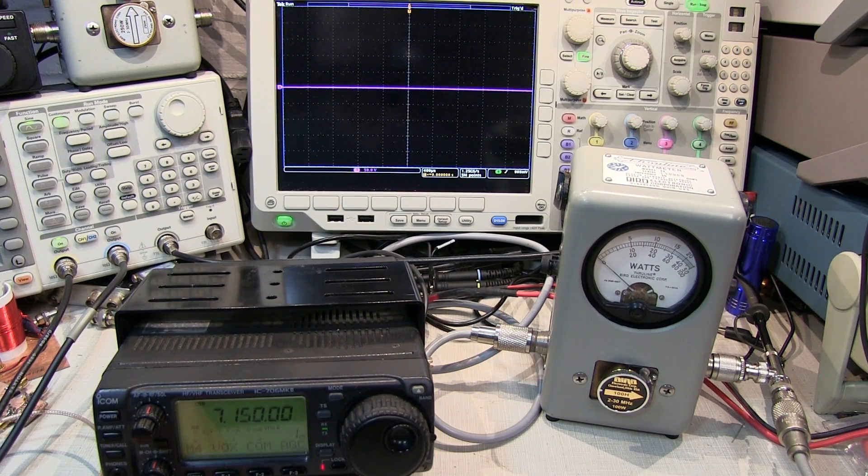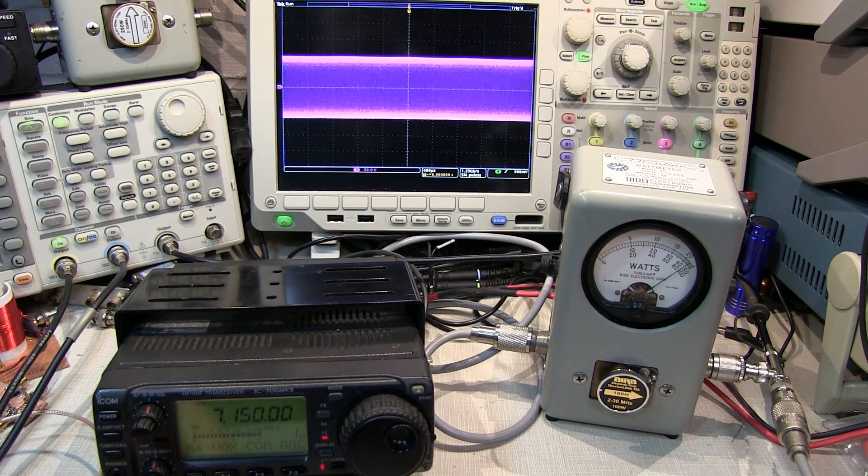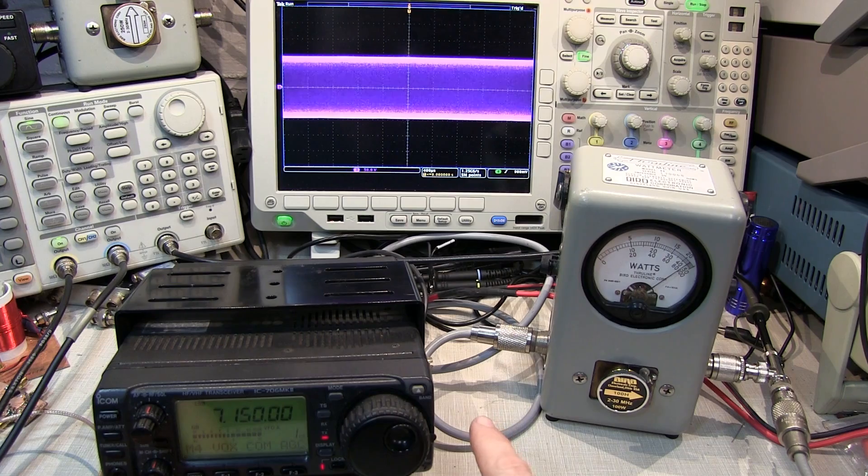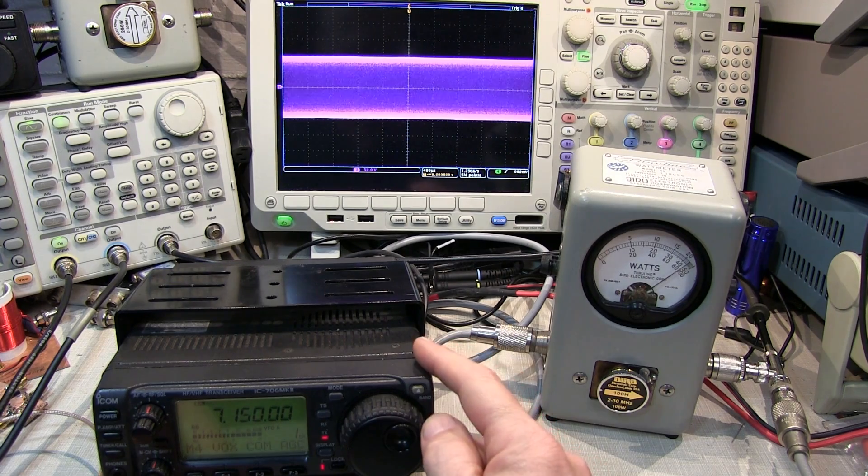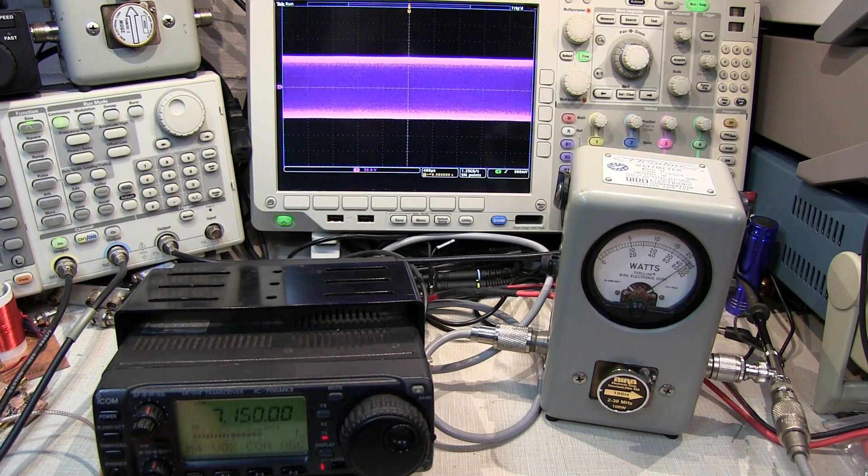Now for other modulation modes, such as CW or FM, the RF envelope, when keyed up, is very similar to the single tone envelope that we get in single sideband. And the peak envelope power, or the maximum output power of the transmitter, can easily be measured with a simple average reading wattmeter, like this BIRD43.